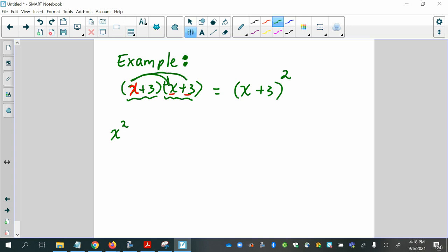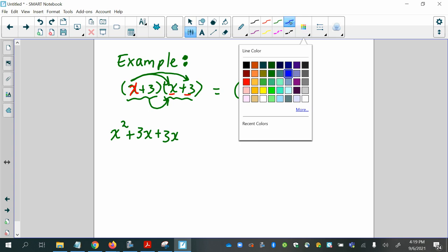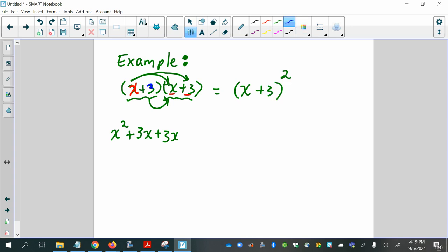Then the outer terms give us 3x. Then we're going to do our inner terms plus 3x. So now we're distributing this 3 to both terms inside the second set of parentheses. So 3x and then positive 9.